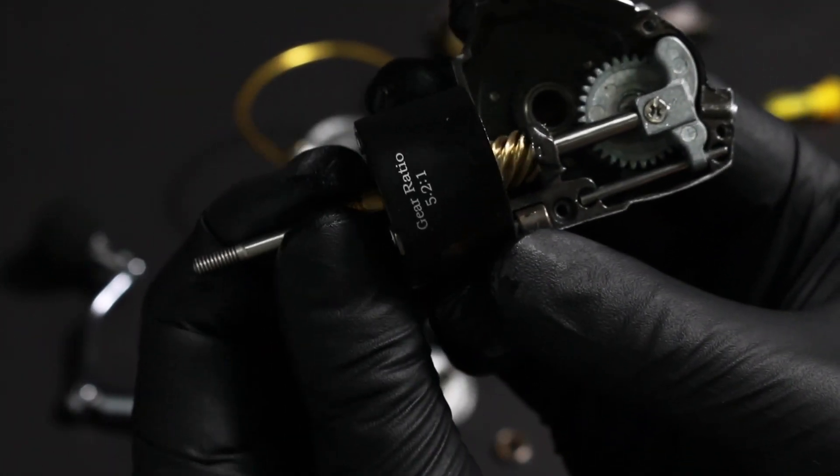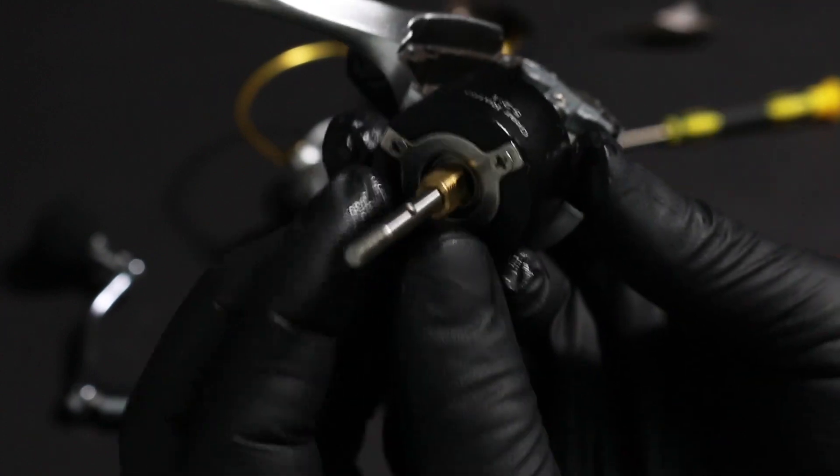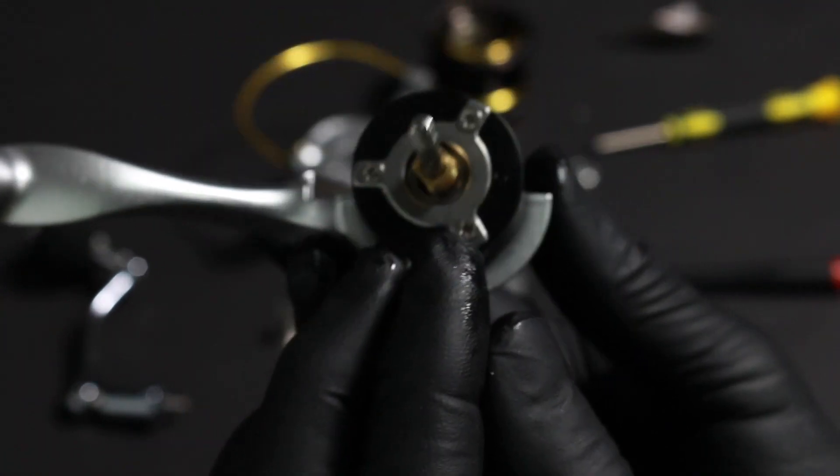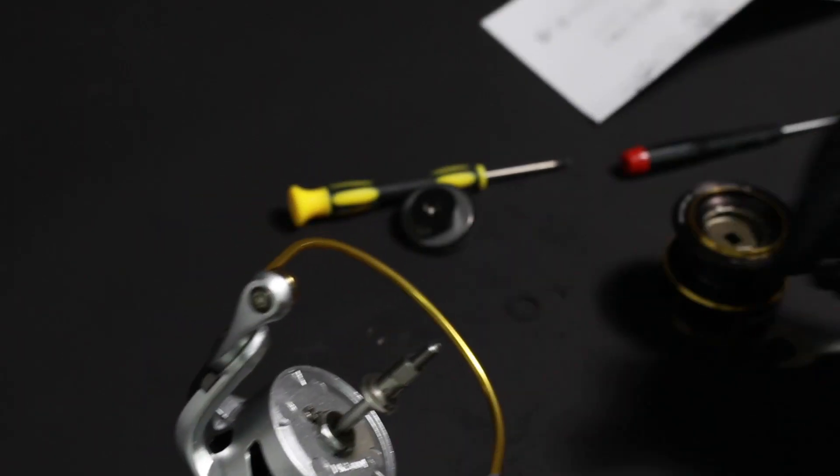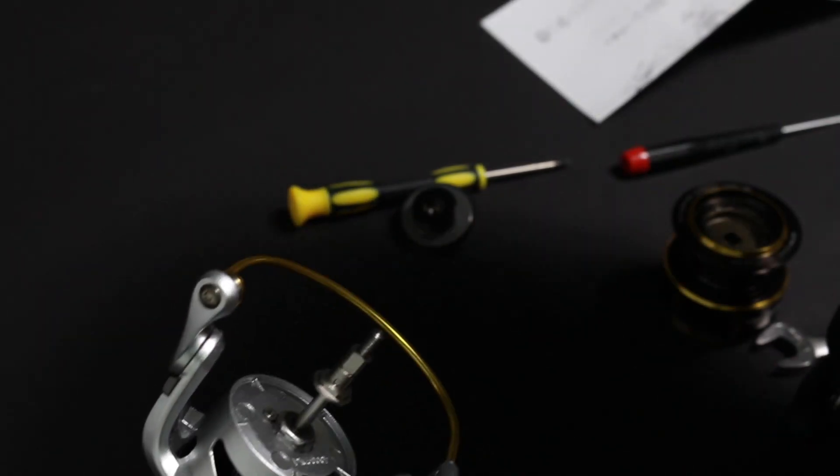But that's typical for a reel of this nature and looks like it's got bearings, shielded stainless steel ball bearings throughout. This, like I say, the main shaft is oversized too, it's four millimeter diameter.